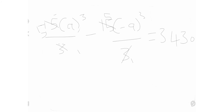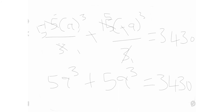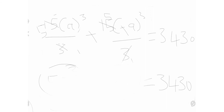We are going to be left with 5a³. Then minus times minus gives us plus, so we get 5a³ plus 5a³ over 3, which equals 3430. Since both terms have the same power, 5a³ plus 5a³ gives us 10a³ equals 3430.